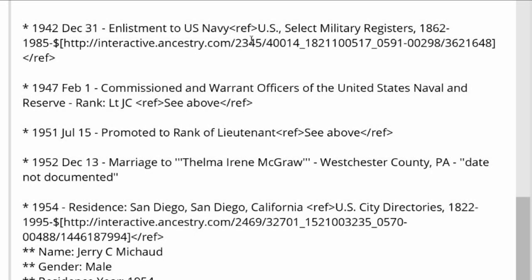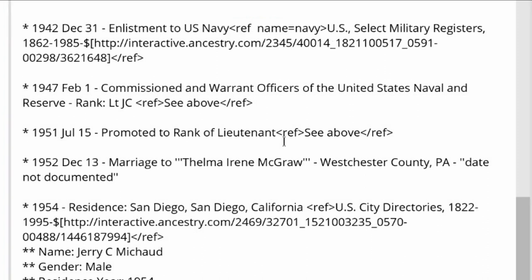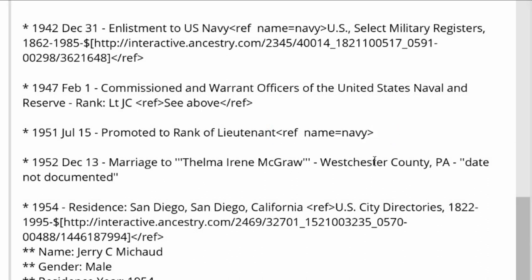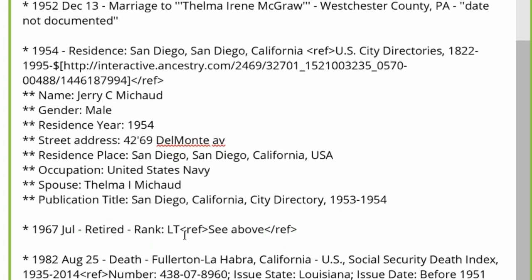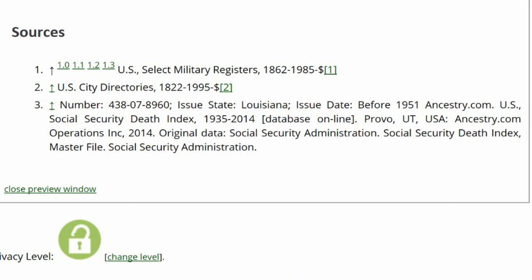To remedy this, name the first time the reference is used — in this case 'Navy'. Copy it to the SeeAbove reference of another fact relying on this source. The only difference is that you put a backslash after the word 'Navy'. Replace the other two SeeAbove references with that named reference. The sources are now in order, correctly identifying their information.